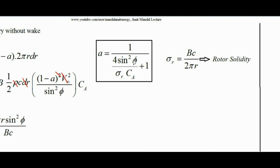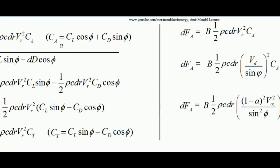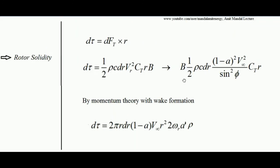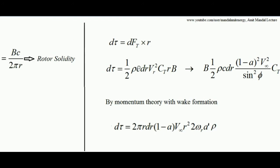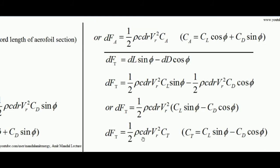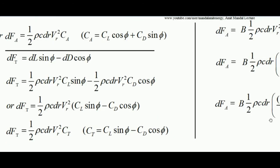So we have found the axial induction factor A in terms of angle φ — the angle between the relative velocity of wind and the tangential direction — and CA, where CA = CL·cosφ + CD·sinφ.